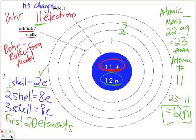For sodium, with 11 electrons: fill 2 in the first shell, then 8 in the second shell — that's a total of 10 — which means 1 electron goes on the third shell.